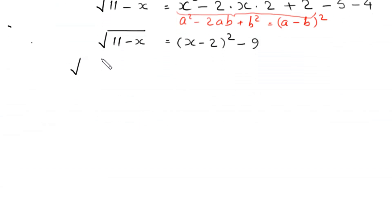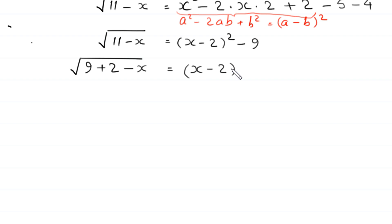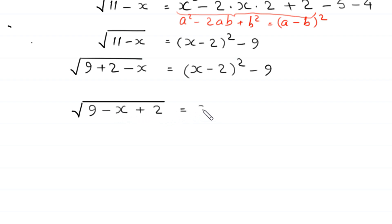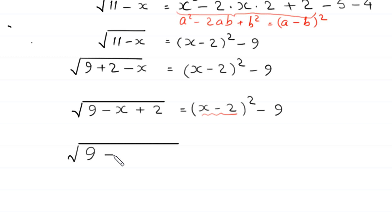We rewrite 11 as 9 plus 2, so the square root of (9 plus 2 minus x) equals (x minus 2) squared minus 9. Rearranging, negative x plus 2 equals (x minus 2) squared minus 9. Factoring out a negative sign from the left side, negative(x minus 2) equals (x minus 2) squared minus 9. We can write this as the square root of 9 minus (x minus 2) equals (x minus 2) squared minus 9.